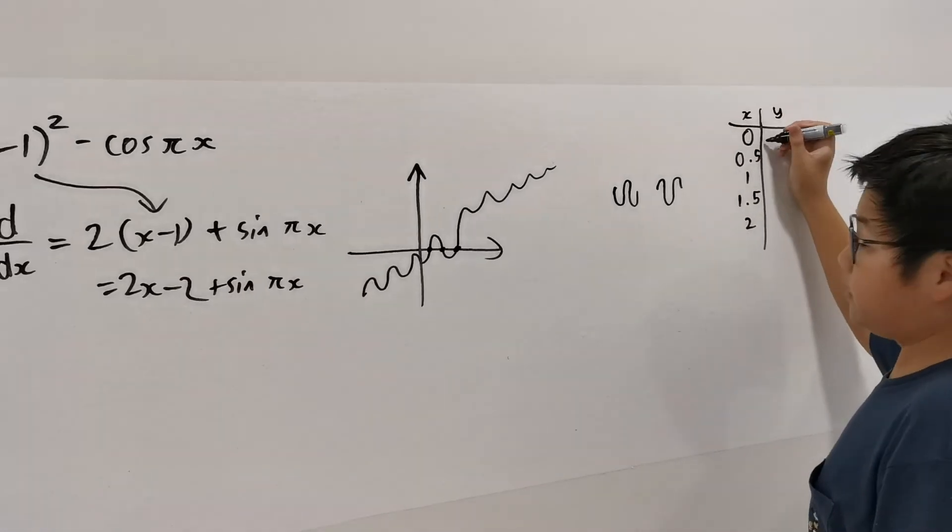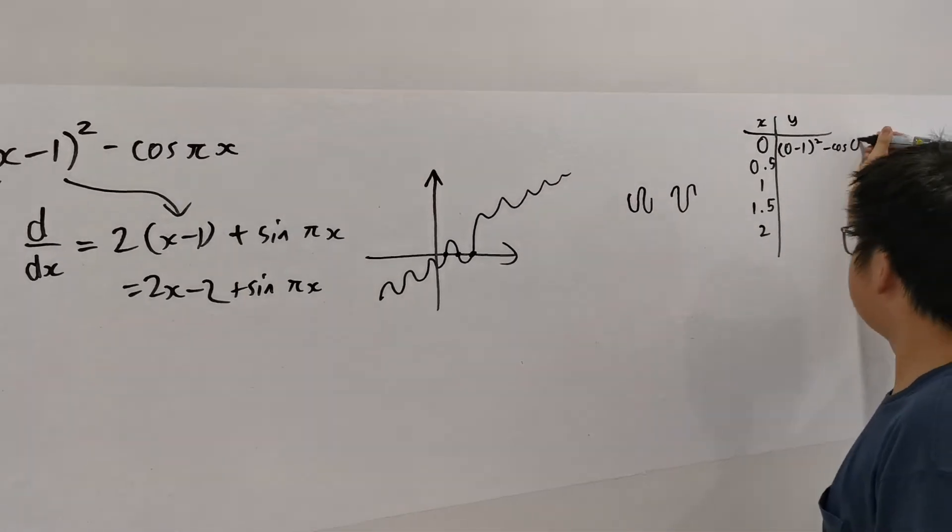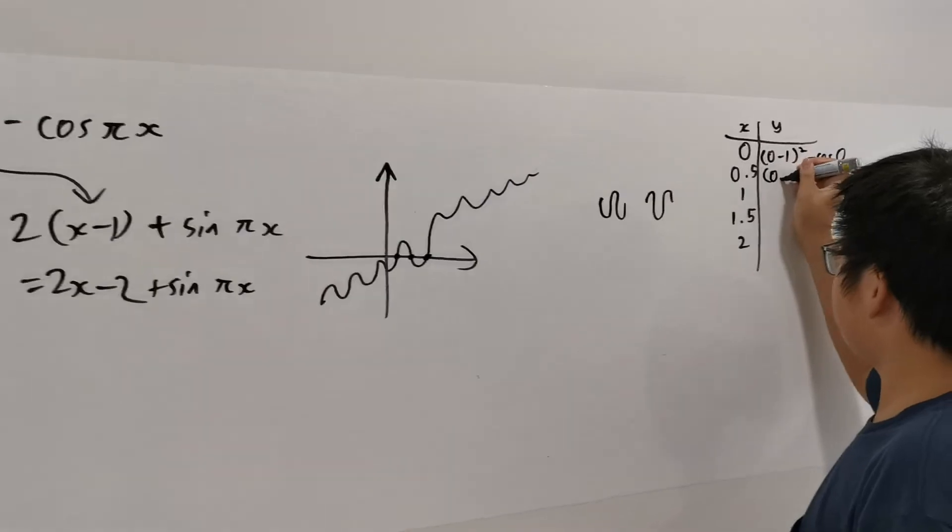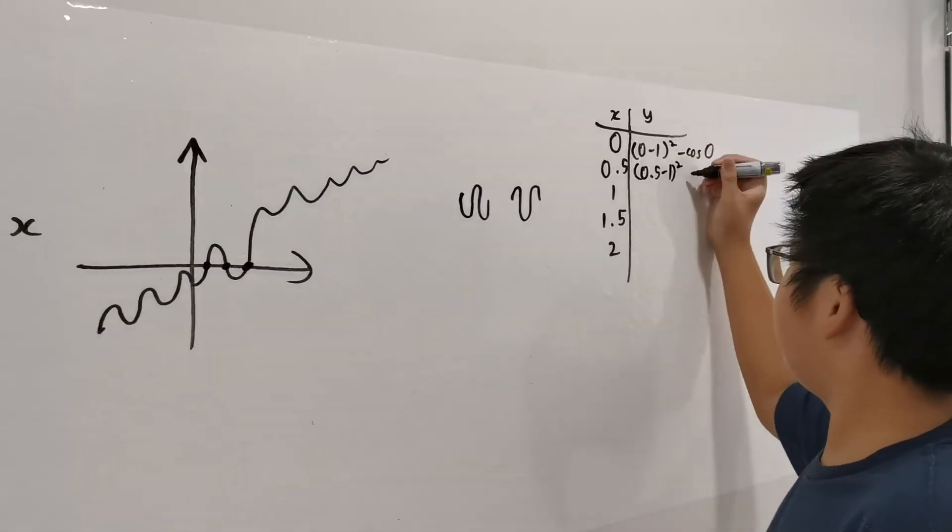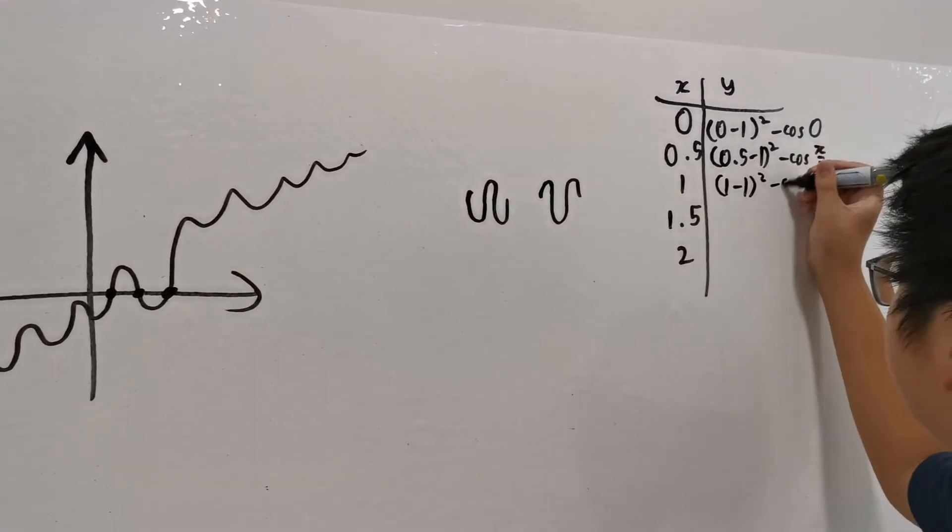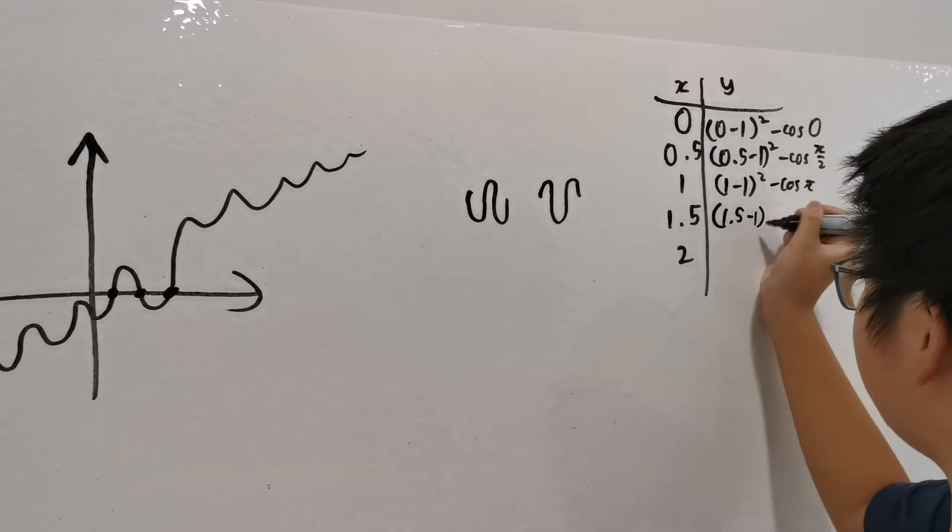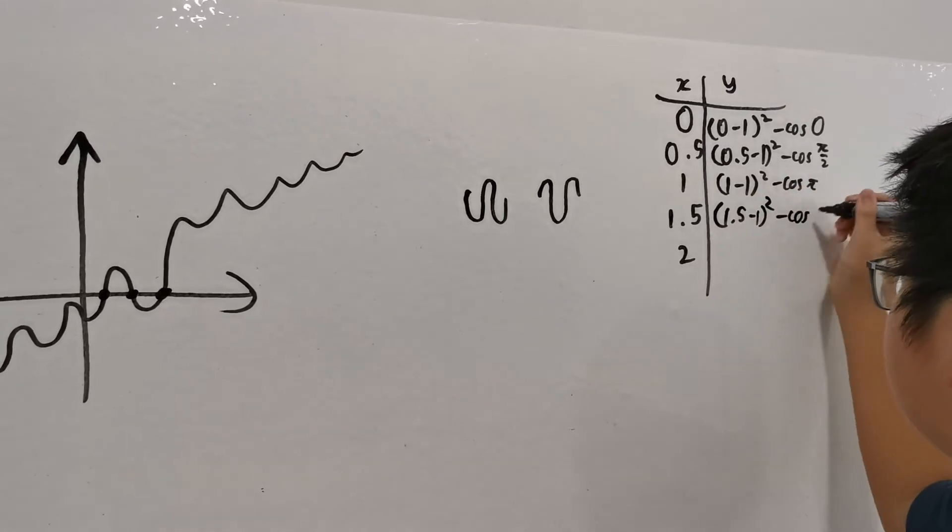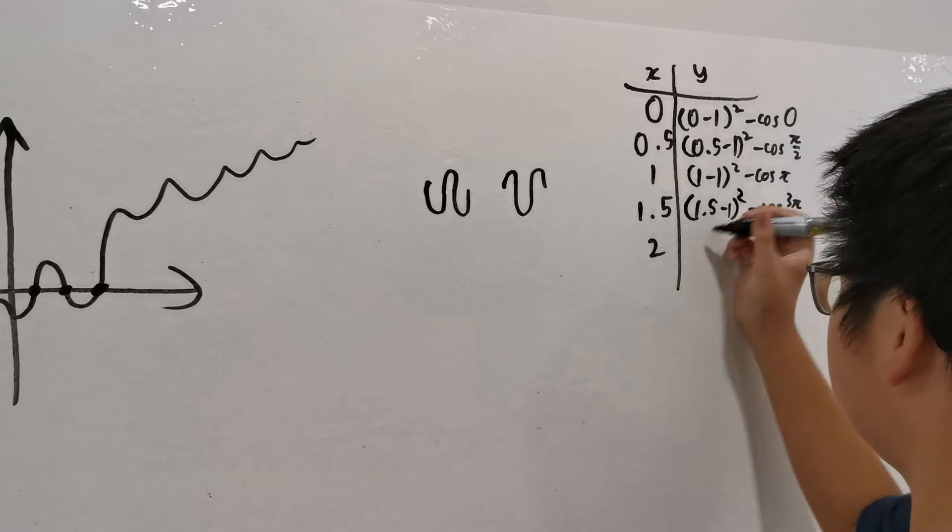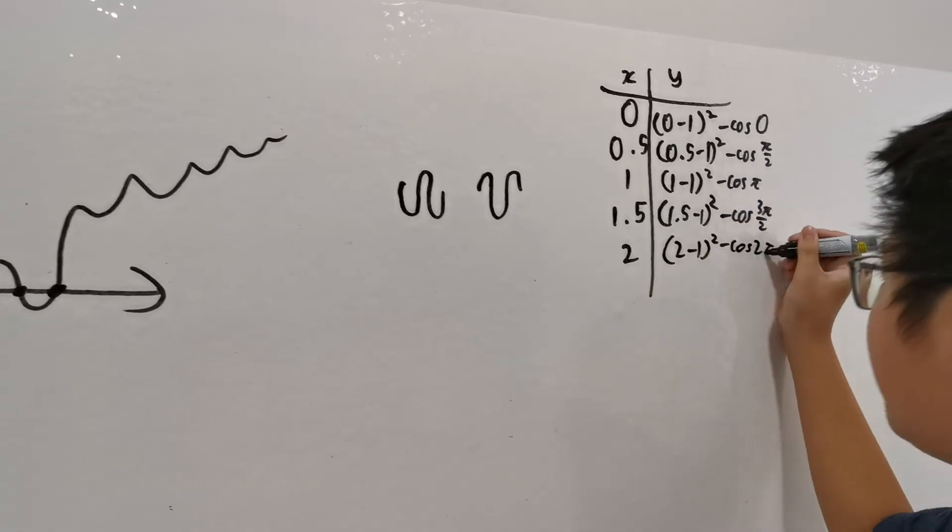This becomes 0 minus 1 squared minus cos 0. 0.5 minus 1 squared minus cos pi over 2. 1 minus 1 squared minus cos pi. 1.5 minus 1 squared minus cos 3 pi over 2. And 2 minus 1 squared minus cos 2 pi.